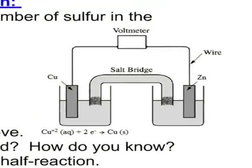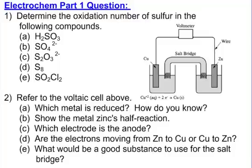And then number two refers to the voltaic cell to the right-hand side there. What metal is being reduced? How do you know? Show that the metal zinc is half-reaction. Which electrode is the anode? Are the electrons going from zinc to copper or copper to zinc? And what would be a good substance to use for the salt bridge?